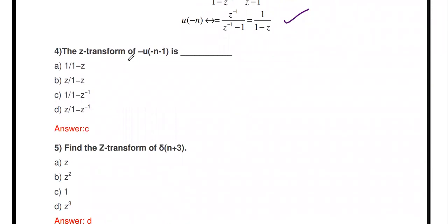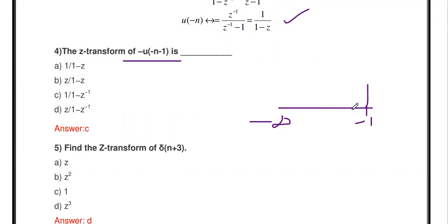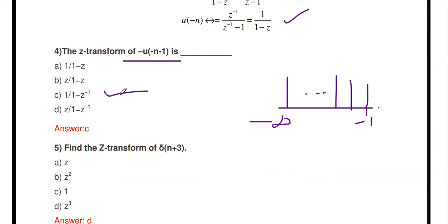Find the Z-transform of u[-n-1]. u[-n-1] has amplitude 1 from minus infinity up to n = -1. The Z-transform of u[-n-1] is 1/(1 - z⁻¹).